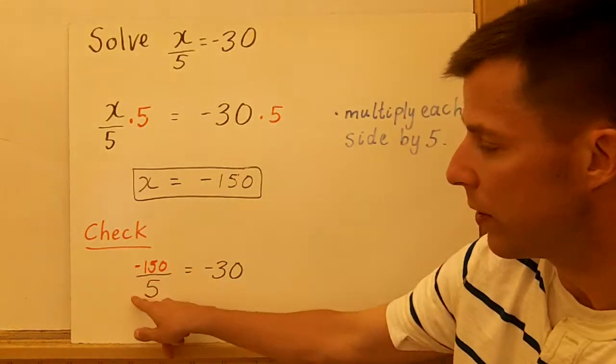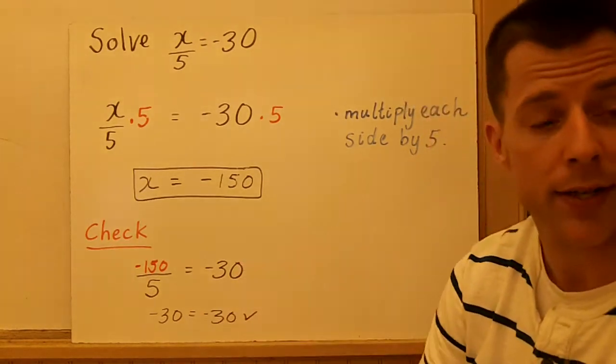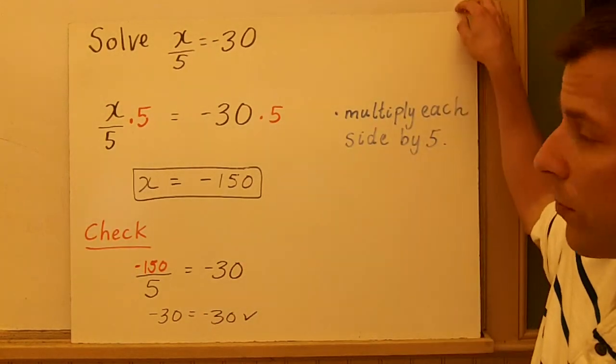Check your answer. Negative 150 over 5, does that equal negative 30? It does, so my answer is correct. And we can move on.